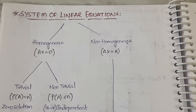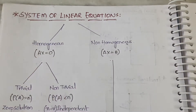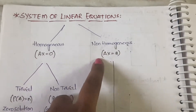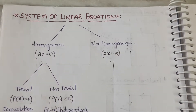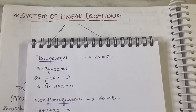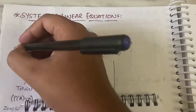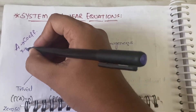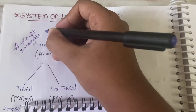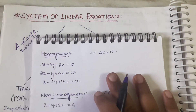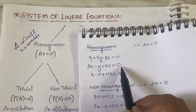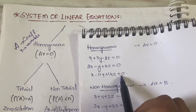In system of linear equations we have two types of equations: homogeneous and non-homogeneous. Homogeneous means it will be in the form of AX equal to zero. Non-homogeneous means AX equal to B. Here, A is the coefficient matrix, X is the variable matrix, zero means zero, and B means constant matrix. In case of homogeneous, all equations are equated to zero instead of a constant term.